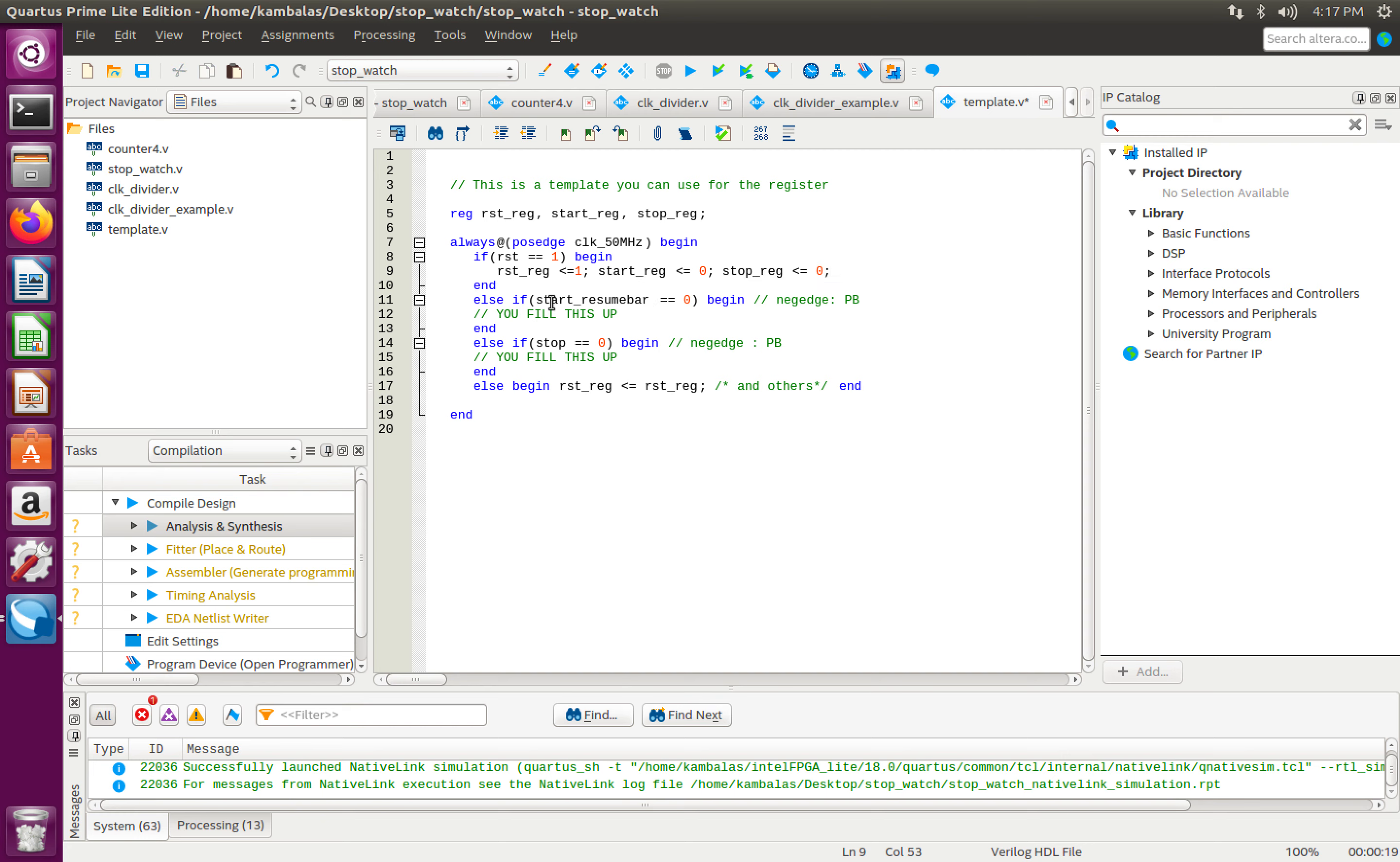And the same thing again, if my start or resume button, if this is my start button, this is basically my push button. So you see the reason, because it is push button, I am checking the value of 0. Because my reset is a 1 or because my reset is a slide switch, I am checking for a 1. And because it is a push button, I am checking for 0's.